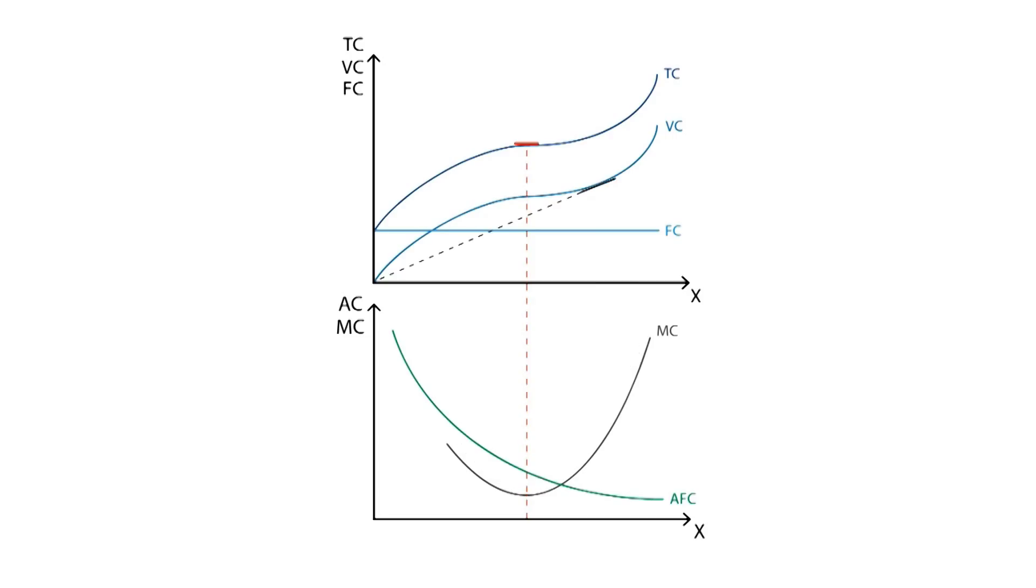The average variable cost curve measures the average cost per unit of output produced. The average variable cost will decrease, as long as the growth rate of the variable cost in the upper graph is decreasing.